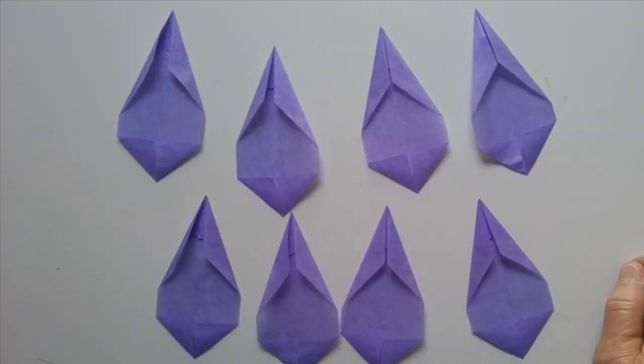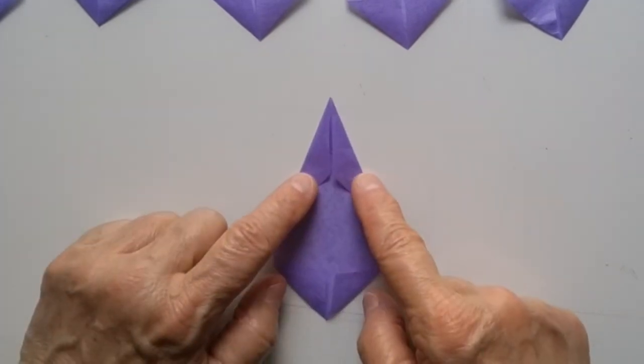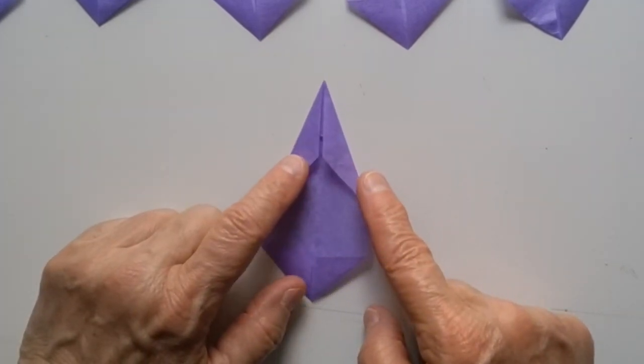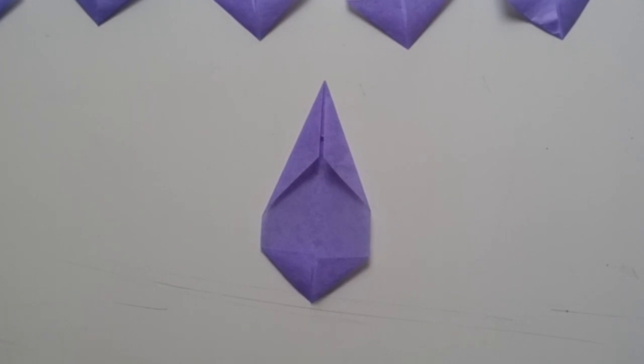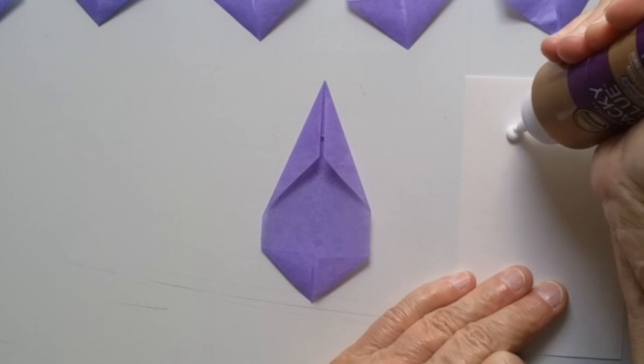There we go. We have eight star points and our next step is to glue. The next step is to glue down all the points that you just folded. I am going to use white glue and a toothpick. You need very, very small amounts of glue. You can use a glue stick if you'd like, but you have to be very careful that you don't get too much glue on your fingers and then they start sticking to the pieces. I am going to recommend just white glue and a toothpick.